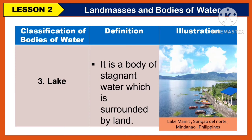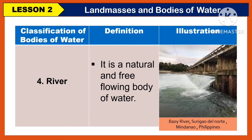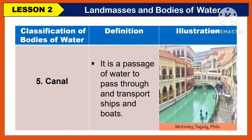Another classification of bodies of water is the lake. It is a body of stagnant water which is surrounded by land. Another classification is what we call a river. It is a natural and free-flowing body of water. Another classification is what we call a canal. It is a passage of water used to transport ships and boats.